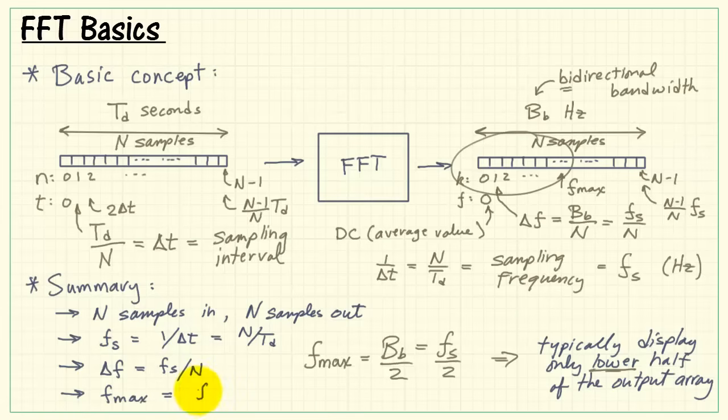And finally, the maximum frequency that we can represent back in the time domain is the sampling frequency divided by 2. This is also known as the Nyquist frequency, by the way.